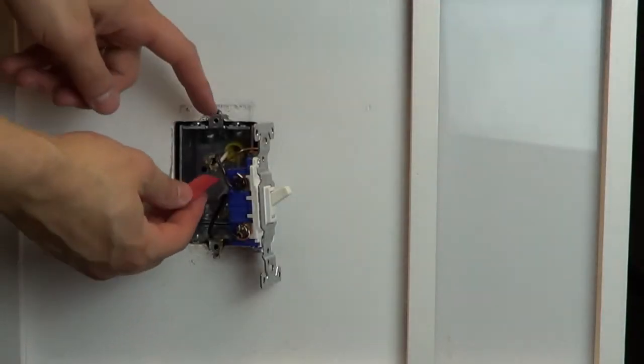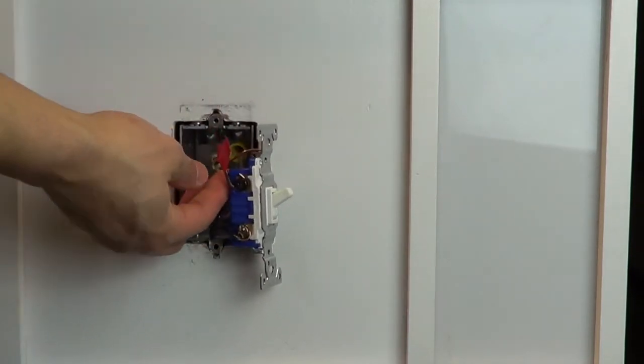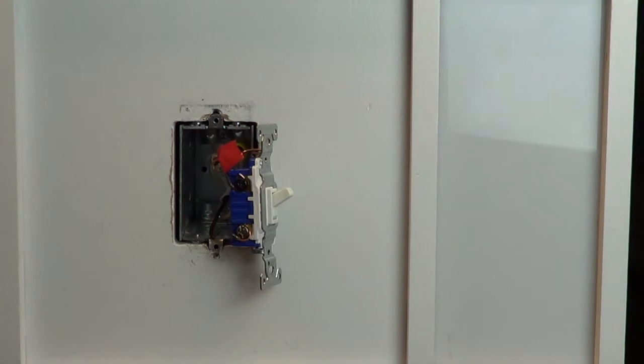Before disconnecting your old switch, look at the screw colors on the sides of the switch. Use a piece of electrical tape to tag the wire connected to the screw that is a different color than the remaining two. Knowing which wire this is will be important when installing your new dimmer.